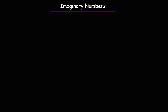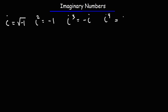In this video we're going to talk about imaginary numbers. Imaginary numbers are basically complex numbers with the imaginary unit i. i is equal to the square root of negative 1, i squared is negative 1, i to the third is equal to negative i, and i to the fourth is equal to 1.